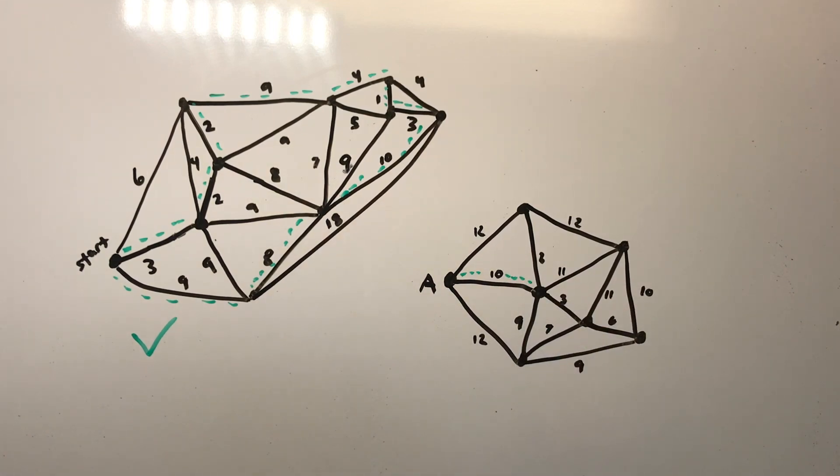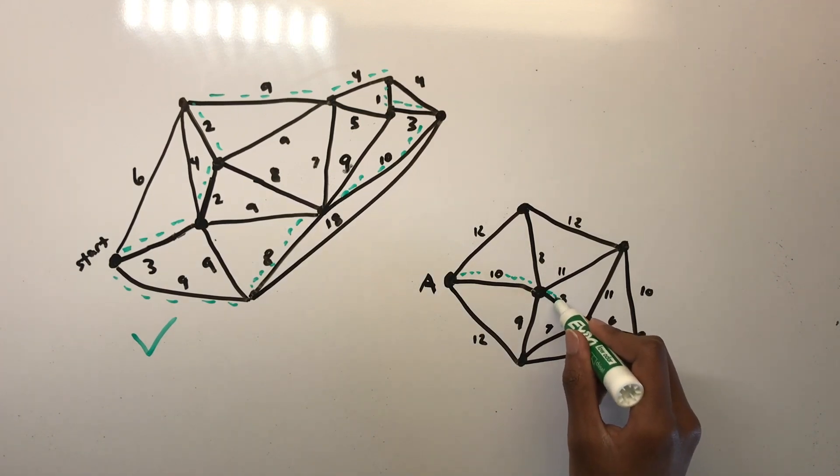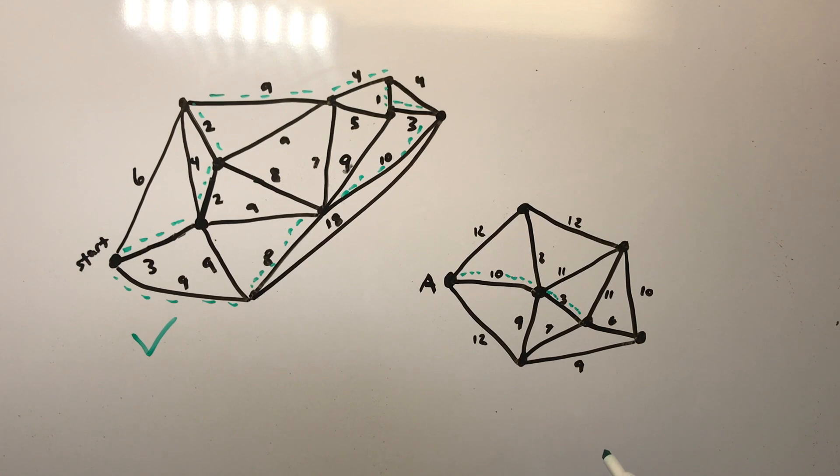But when we get to the graph on the right, starting at A and finding a tour that loops back to A presents an issue. We would start at A and move to the node connected by 10 next. After that node, we would move to the node connected by 3 and then the node connected by 6, all while picking whichever path is cheapest. And from that node, we would go to the node connected by 9. From this node, we need to get to either of the nodes on top, but since it isn't a complete graph, there is no way of connecting either. Therefore, we run into a dead end and a tour is unable to be created from the node where we're at.